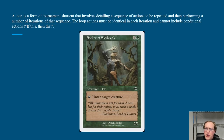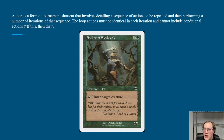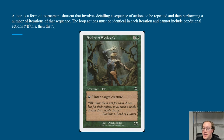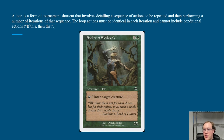So what is a loop? A loop is any kind of tournament shortcut that involves detailing a sequence of actions that can be repeated, performing a number of iterations of that sequence — this is quoted directly from the MTR. For example, Seeker of Skybreak: you can activate its ability targeting itself, untap it, and you're back in the exact same game state as before. That game action is identical every time you perform it.